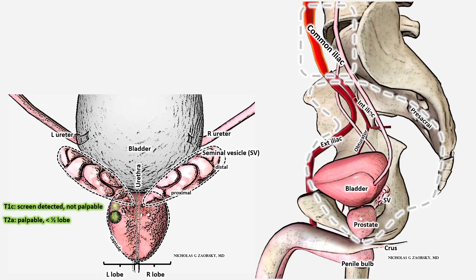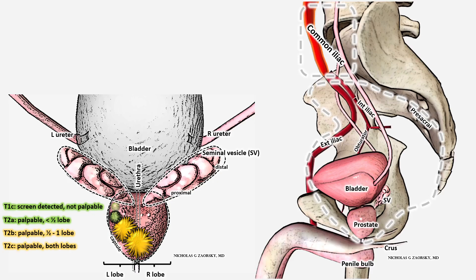A T2A cancer means that you can feel something on the digital rectal exam — so it is palpable. However, it is less than one half of one lobe, either the left or the right side. I put them in green because these are usually favorable, meaning lower risk cancers. A T2B cancer is palpable but involves more than one half and up to one whole lobe. A T2C cancer is palpable and involves both sides — so when you do the digital rectal exam, you feel it on both sides.